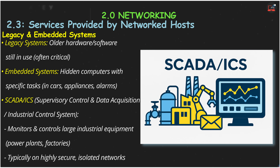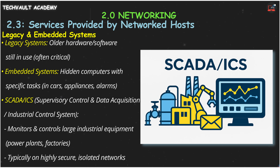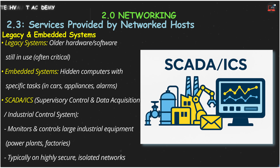A critical type of embedded system, especially in industrial settings, is SCADA — Supervisory Control and Data Acquisition — or more broadly, ICS, Industrial Control Systems. These are used to monitor and manage large-scale industrial machinery in places like power plants or factories, often from a distance. Because they control vital infrastructure, SCADA and ICS systems are typically on highly secure, isolated networks.